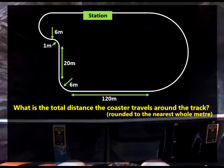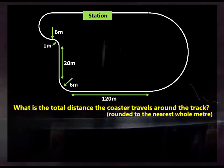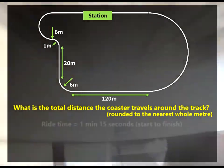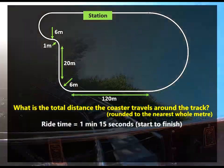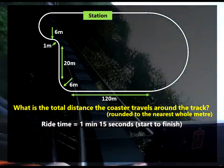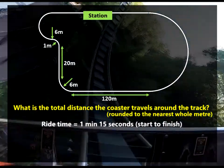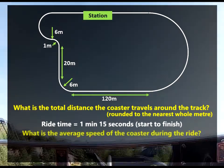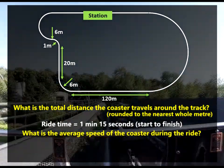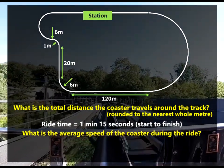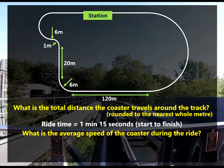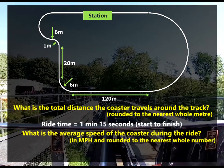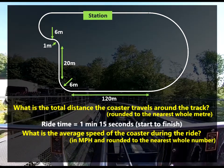Secondly, we know that the time taken to ride Oblivion is only 1 minute 15 seconds from start to finish. So can you tell me what is the average speed of the roller coaster during the ride? Give your answer in miles per hour, and round it to the nearest whole number.